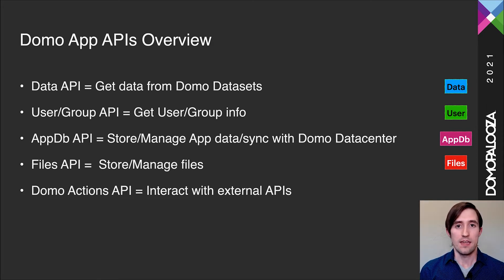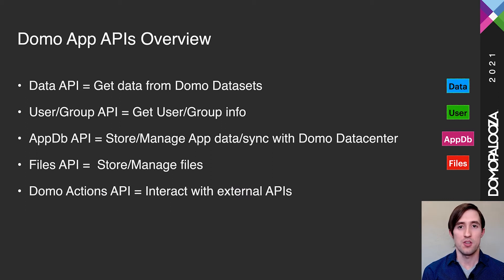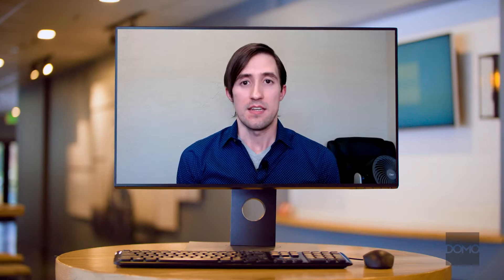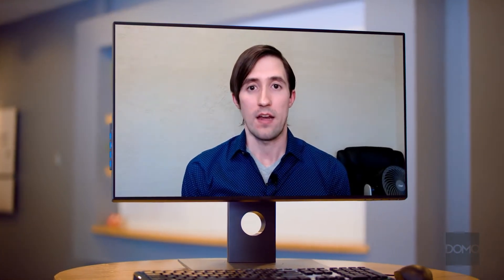You can use the User and Group API for things such as showing a user's avatar within the Domo custom app or automatically filling in a name field when entering data. The meat and potatoes of this presentation focuses on the AppDB API, which allows you to go beyond visualization and actually use the app to store, update, edit, and delete data all from within the Domo platform — synced directly back to your Domo data center for use in data flows, cards, etc. The Files API is where we can store and manage files, mostly photos in these examples. The Domo Actions API allows you to interact with external systems, perform authentication with third-party platforms, and do things like adding or updating a record in your CRM.